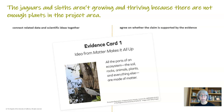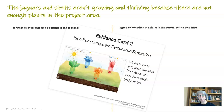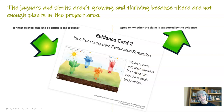Evidence card one is from a book: all parts of an ecosystem — the soil, rocks, animals, plants, and everything else — are made of matter. Here we have data and scientific ideas put together because everything is made up of matter. Do we agree that this information supports our claim? Evidence card two from the ecosystem restoration sim: when animals eat, the molecules from food turn into the animal's body matter. Here again we see data and scientific ideas together. I'm beginning to see a connection to the claim because animals need to eat, and that's how the jaguars and sloths are going to thrive — they need that body matter.